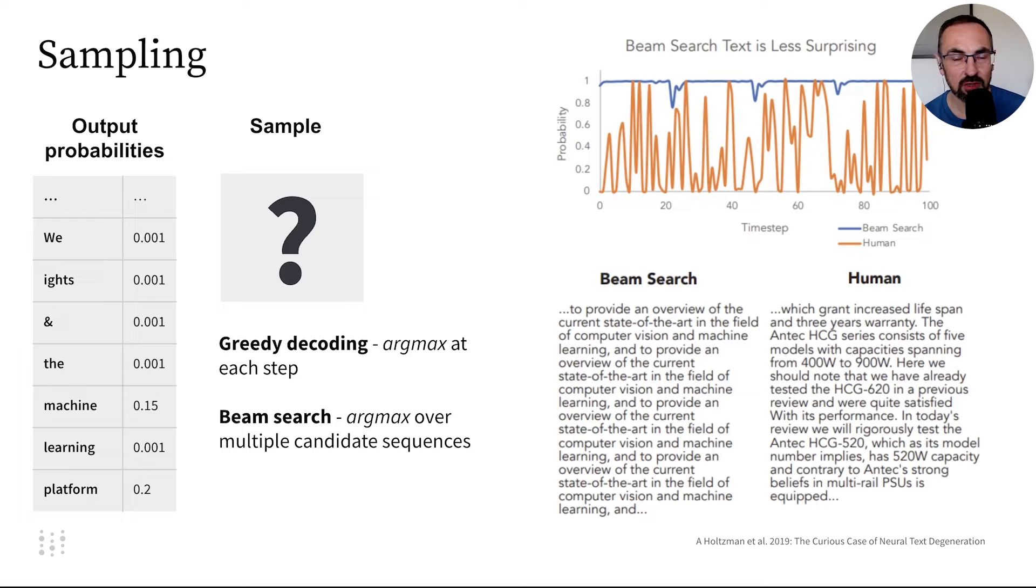You might think choosing the token with the highest probability is best. This approach is called greedy decoding. Another option is BeamSearch, which generates multiple candidate sequences to maximize the probability of a sequence of tokens.